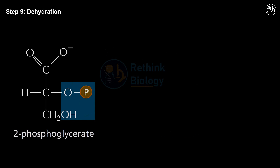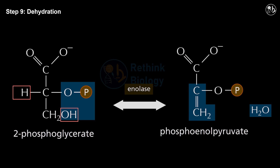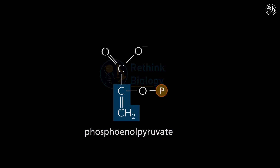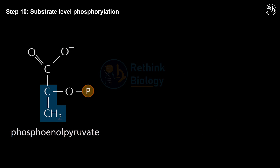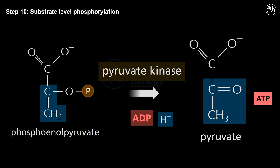Step 9: Dehydration. In this step, the enzyme enolase removes a water molecule from 2-phosphoglycerate, forming a double bond between the second and third carbon atoms. This reaction produces phosphoenolpyruvate, which has a high-energy phosphate bond that can be used to generate ATP in the next step. Step 10: Substrate level phosphorylation. In this step, the enzyme pyruvate kinase transfers a phosphate from phosphoenolpyruvate to ADP, forming ATP and pyruvate. This pyruvate has 3 carbon atoms and can be further processed depending on the availability of oxygen.